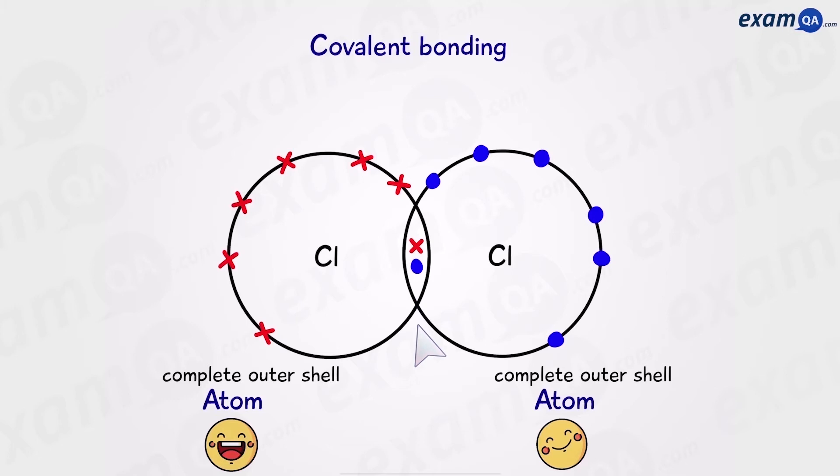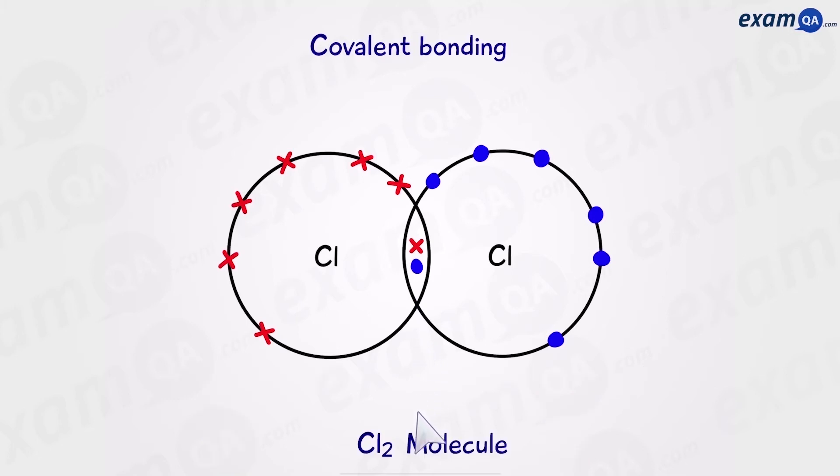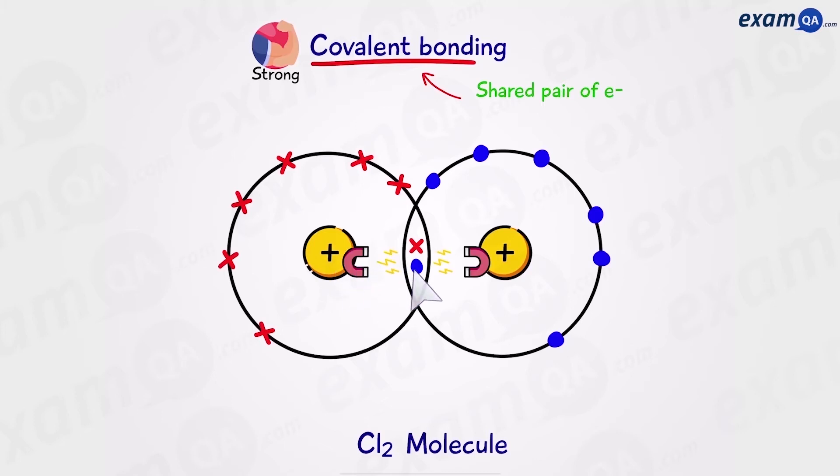We now have a complete outer shell in both atoms and we have now created a chlorine molecule. This shared pair of electrons is referred to as a covalent bond. And covalent bonds are strong. The reason for this is because the nucleus of an atom is positively charged. And these positive nuclei are attracted to the shared pair of electrons. Meaning that these atoms are going to be held together tightly.